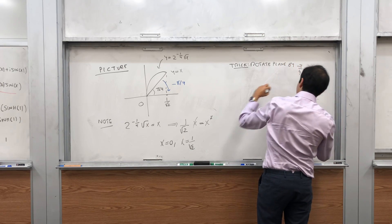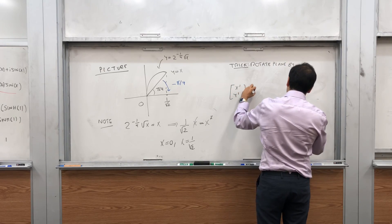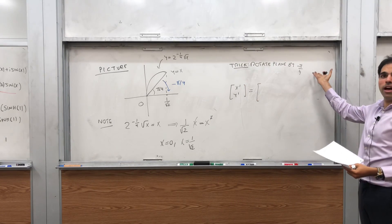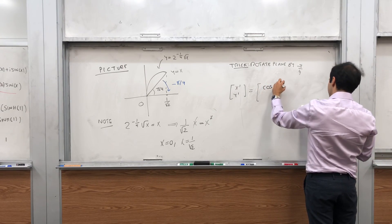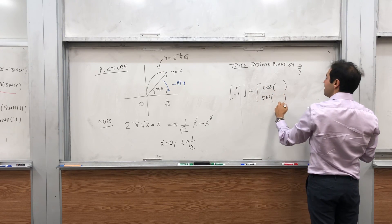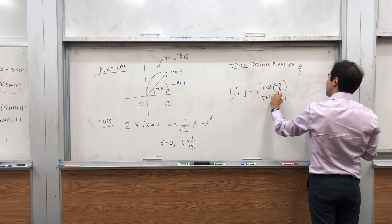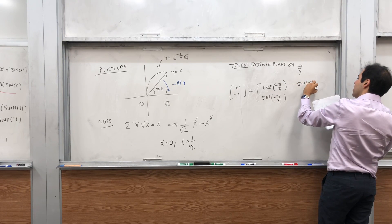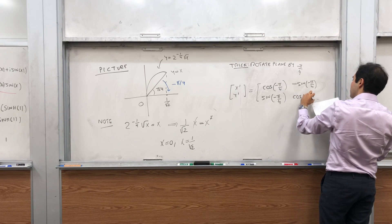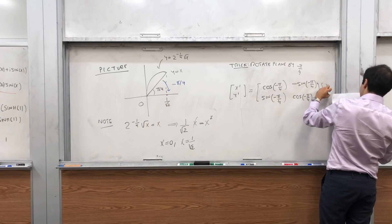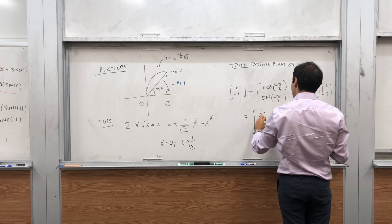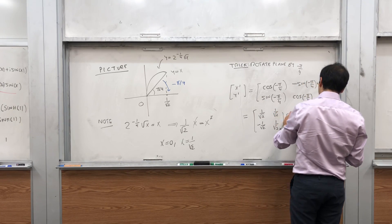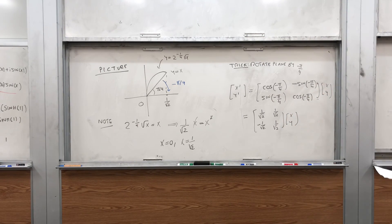We rotate the plane by minus pi over 4 and define new coordinates x prime and y prime — not derivatives, just two new variables. To rotate by minus pi over 4 we use a rotation matrix with cosine and sine entries. That gives us the matrix with entries 1 over square root of 2, negative 1 over square root of 2, 1 over square root of 2, 1 over square root of 2, times the vector (x, y).